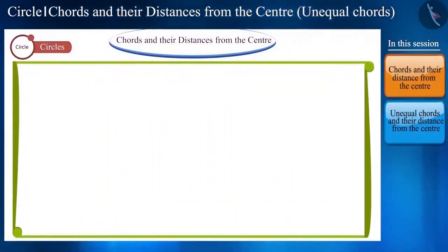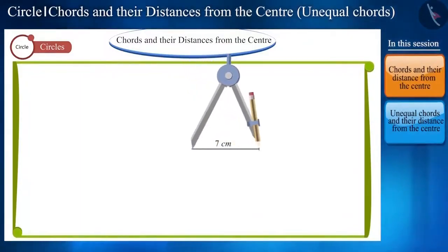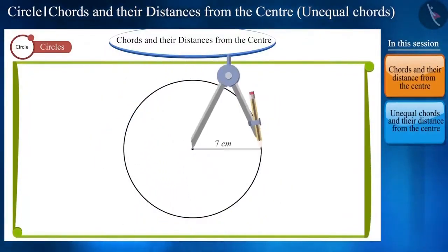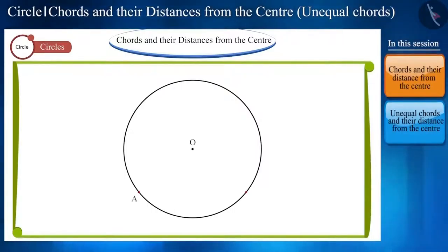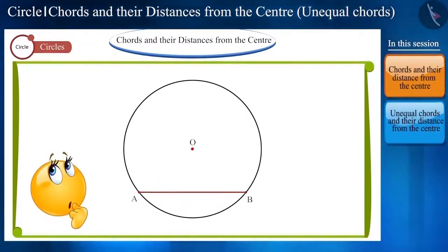Friends, let's draw a circle with radius 7 cm whose center is O. If we take two points A and B on it, then the line segment AB will be called one of its chords. Can you tell how far is the chord AB situated from the center O? Let's understand it.